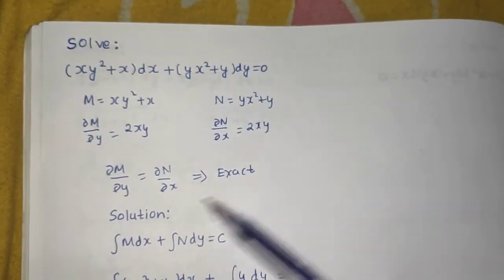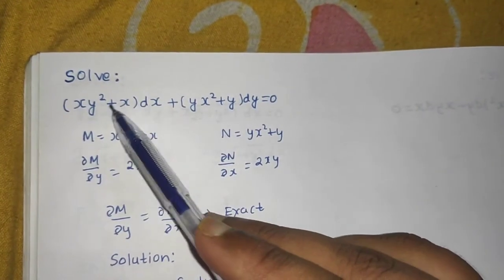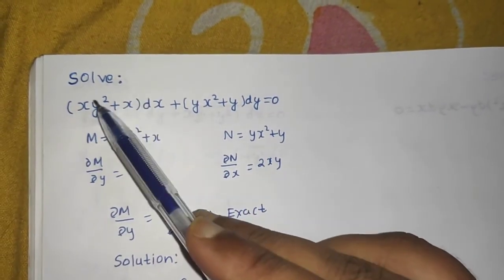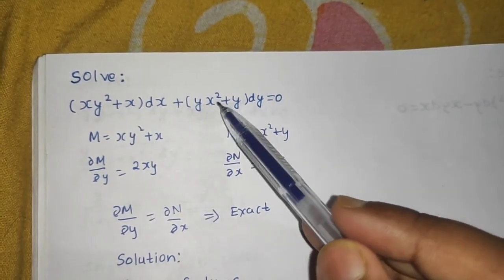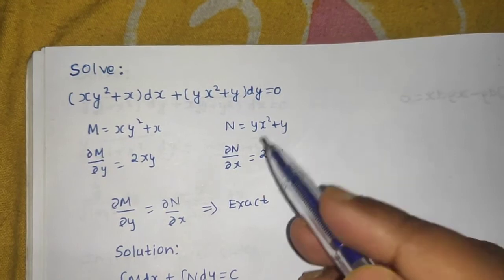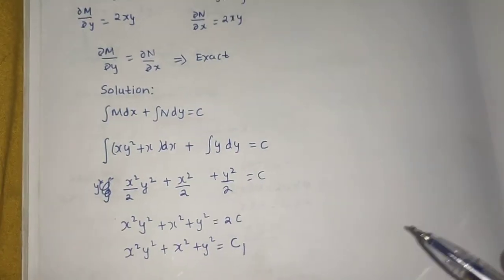This checking part you can do in mind only. You differentiate partially so you'll get 2xy from here, differentiate partially with respect to x and get 2xy from here. Since both are equal, this is exact. The solution portion was again easy to solve. Keep going.